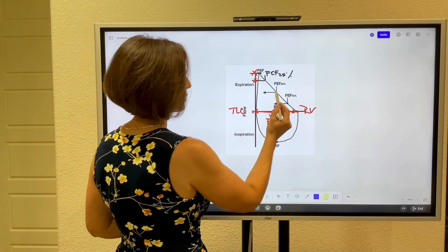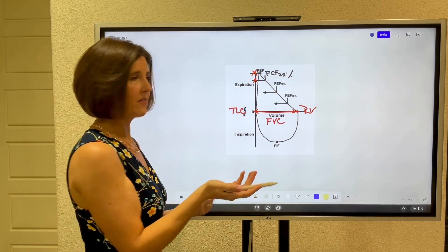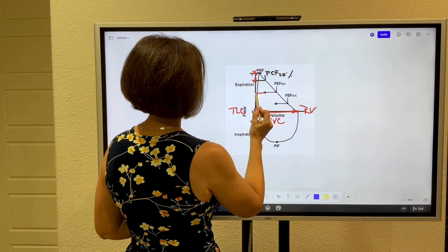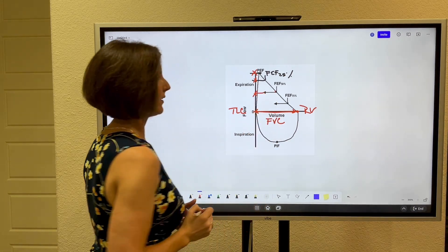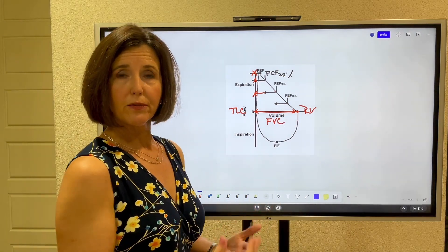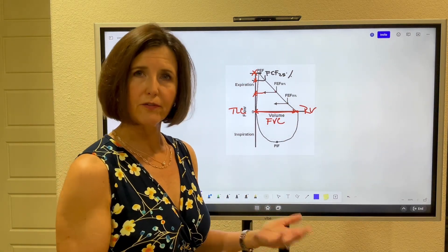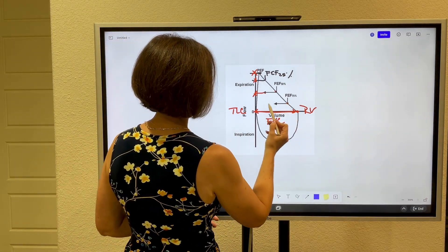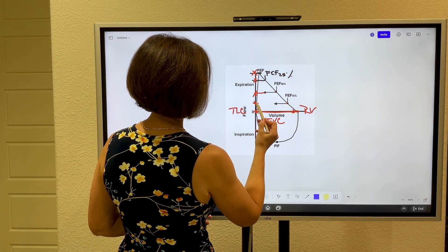As the patient continues to blow when they have 50 percent of their air out that's the FEF 50 and you bring this over and you measure it right there. Then there's the FEF 75, forced expiratory flow when 75 percent of their volume has been pushed out of their airway. That's super simple. There it is. You follow it over and you measure it right here.